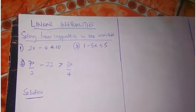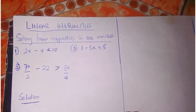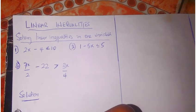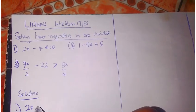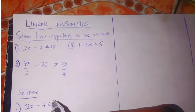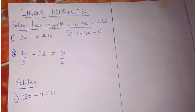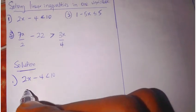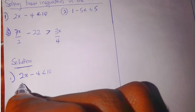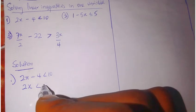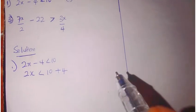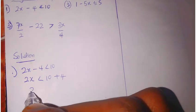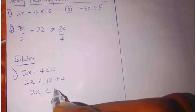Let's look at these questions. We have the first question as 2x minus 4 less than 10. How will I solve this? I'll solve it like a normal linear equation by collecting like terms. So I'm going to have 2x to be less than 10 plus 4. This becomes 2x to be less than 14.